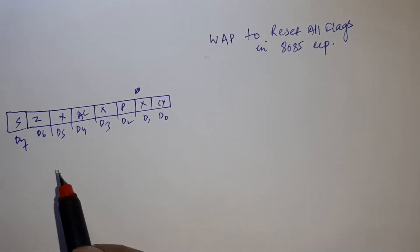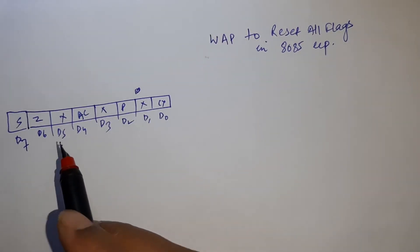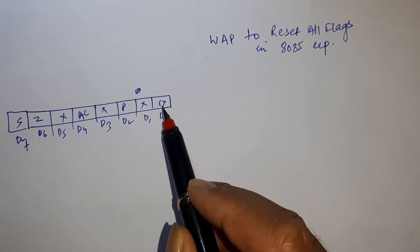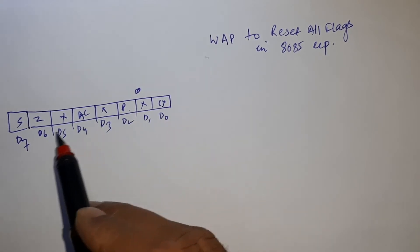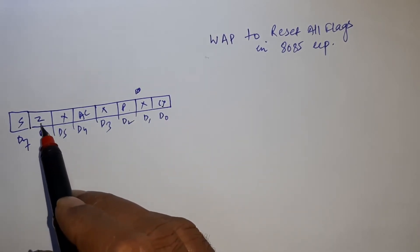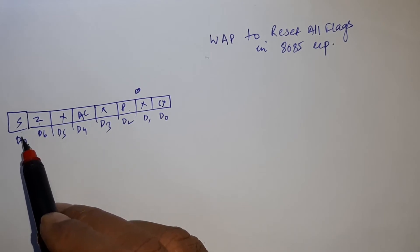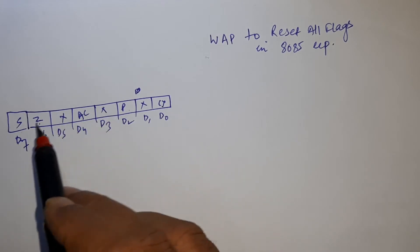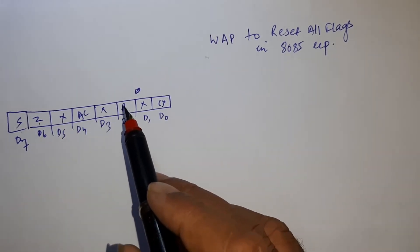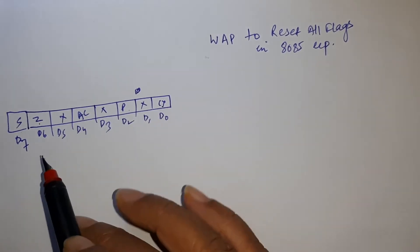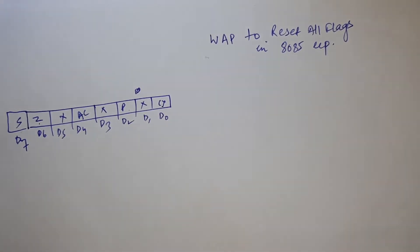So basically this is the structure of the flag register. Here you can see the bit positions — carry flag, parity flag, auxiliary carry, zero flag, and sign flag. We have to write a program to reset all the flags, meaning the value of every flag should be zero. Then we can say yes, all the flags are reset.